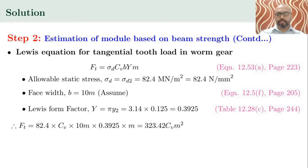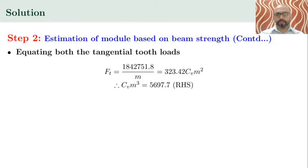Substituting these values into the Lewis equation gives FT = 82.4 × CV × 10M × 0.3925 × M = 323.42 · CV · M². Equating the theoretical tangential tooth load and the Lewis tangential tooth load: 1,842,751.8 / M = 323.42 · CV · M², which gives CV · M³ = 5,697.7.